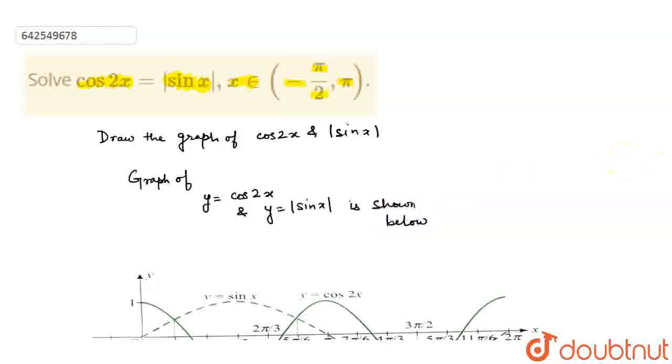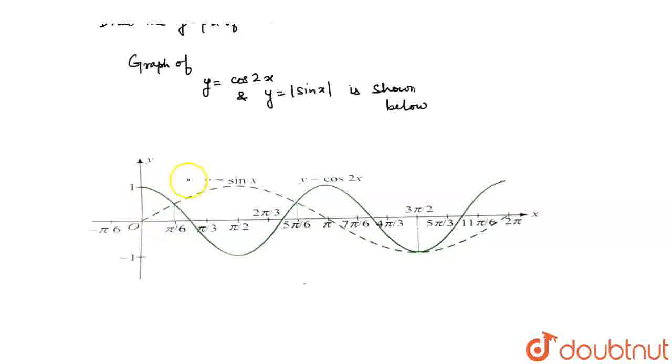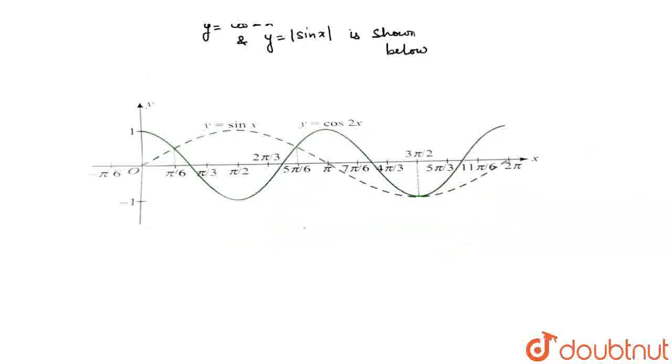This is the graph. We can see the crests and the troughs. To find the number of intersection points, I have to find the solutions.